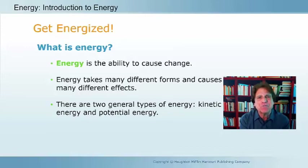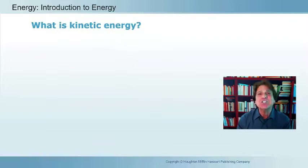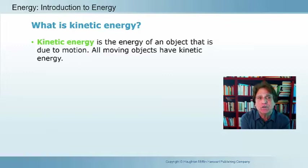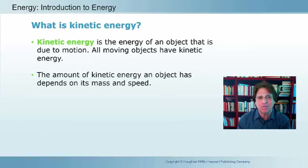There are two general types of energy. One type is called kinetic energy, and the other type is called potential energy. Kinetic energy is the energy of motion. The amount of kinetic energy that any object has is dependent upon two things: its mass and the speed at which it's moving.